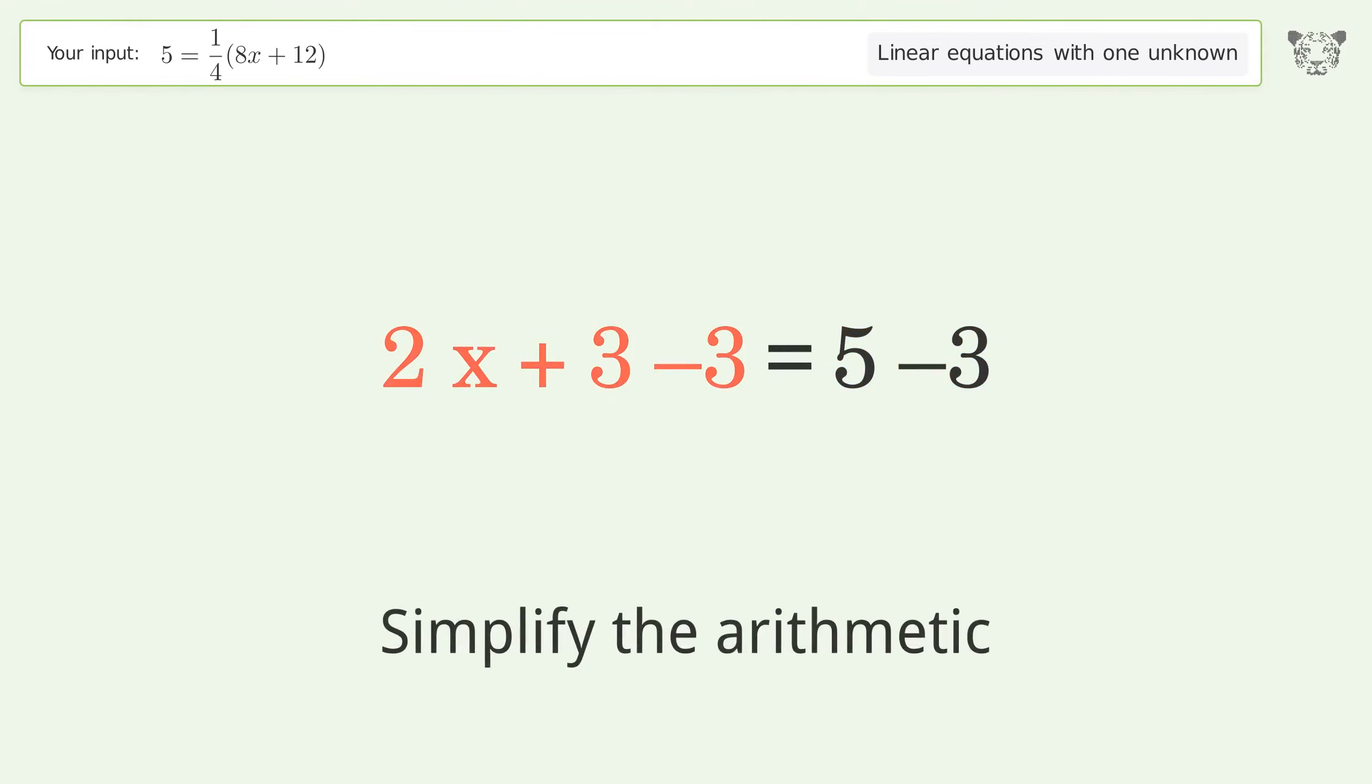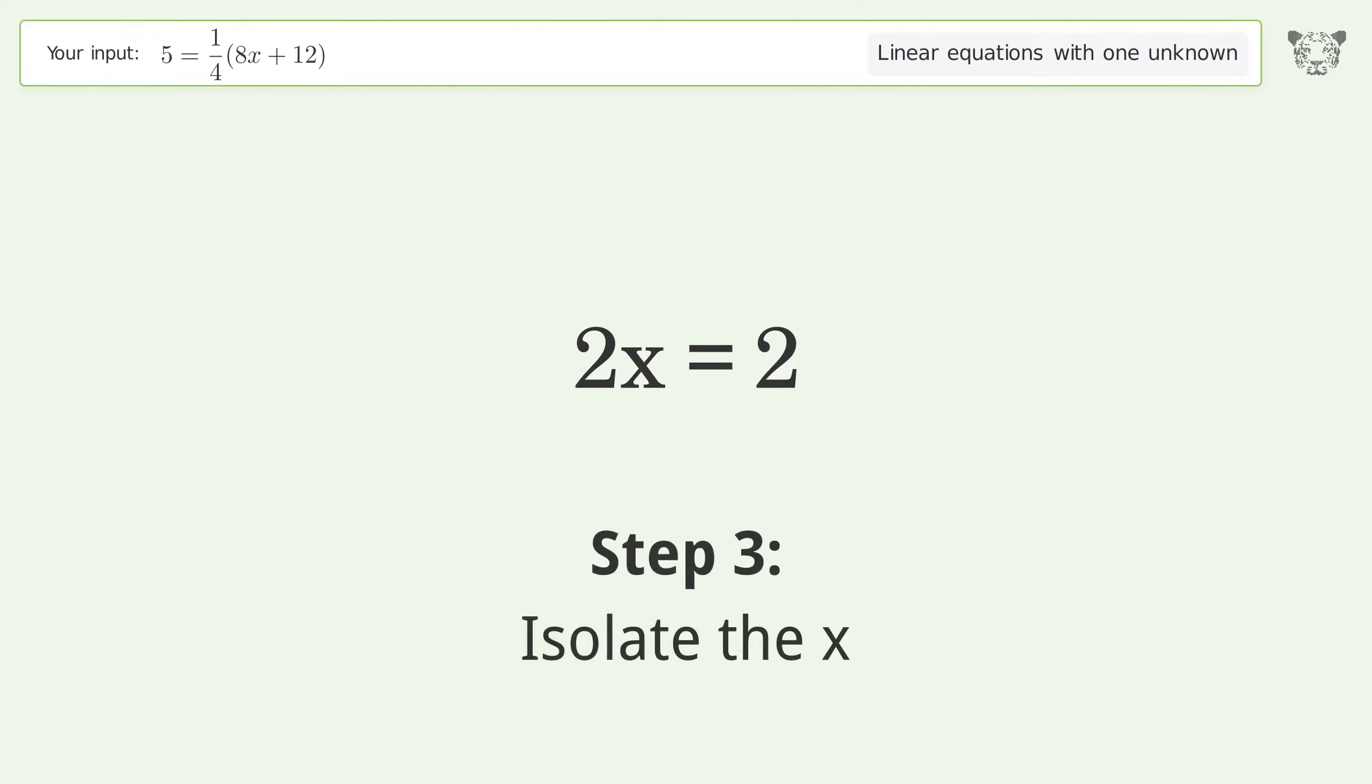Simplify the arithmetic. Isolate the x. Divide both sides by 2.